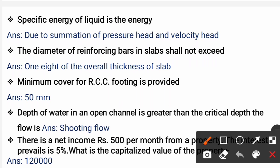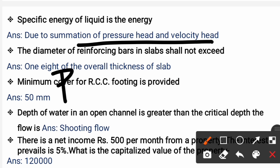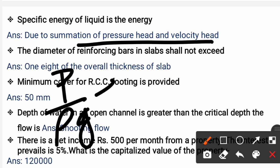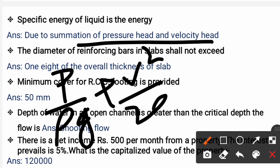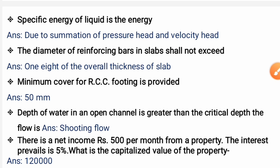Specific energy of a liquid is the energy due to the summation of pressure head and velocity head: P/(ρg) + V²/(2g). It is the summation of pressure head and velocity head.